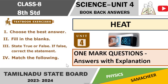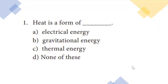Choose the best answer. First question: heat is a form of what energy? The options are electrical, gravitational, or thermal energy. Heat is the form of thermal energy, so Option C is the right answer.